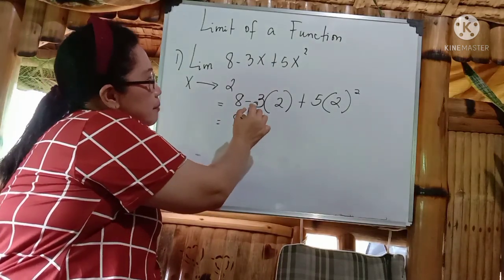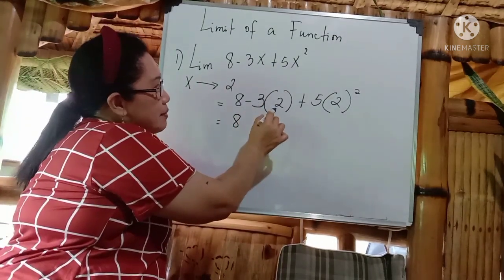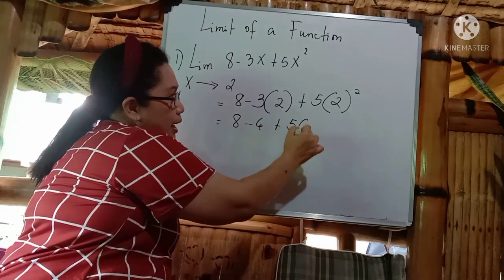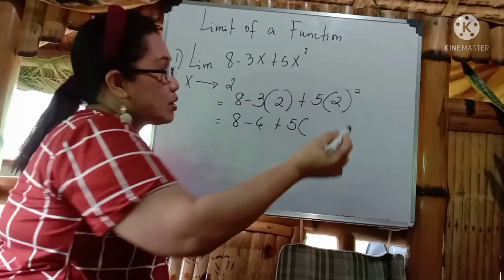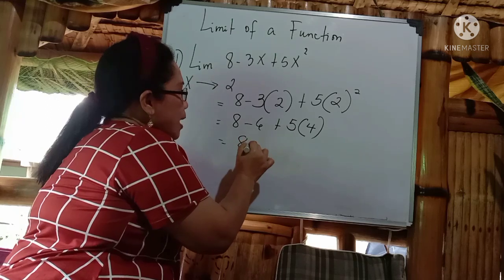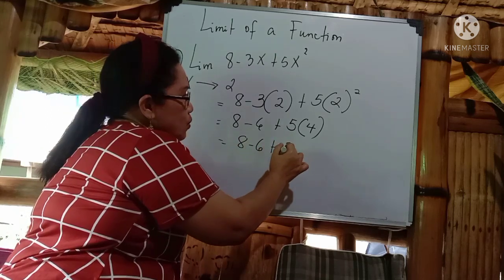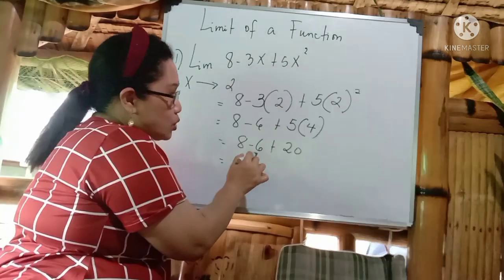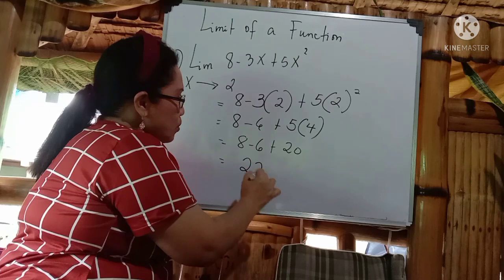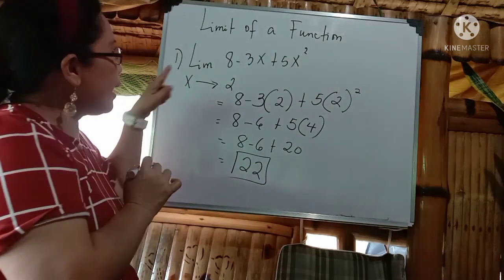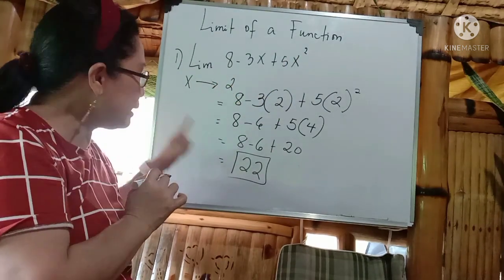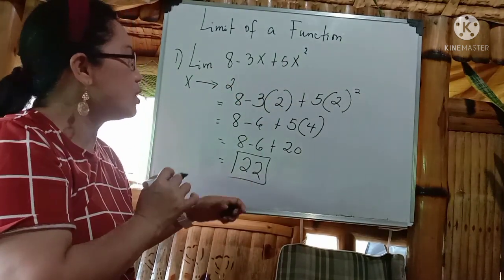After that, we do the operations inside the parentheses. Negative 3 times 2 gives us negative 6, plus 5 times 2 squared. Two times 2 is equal to 4, so that becomes 5 times 4 which is 20. So we have 8 minus 6 plus 20. Eight minus 6 is equal to 2, and 2 plus 20 is equal to 22. So the limit of 8 minus 3x plus 5x squared when x approaches 2 is equal to 22.